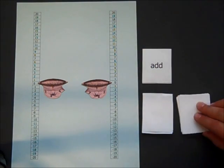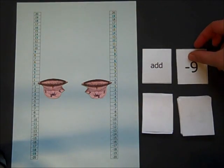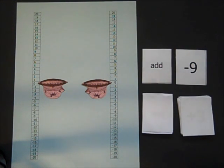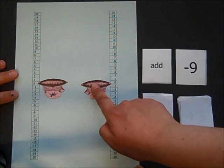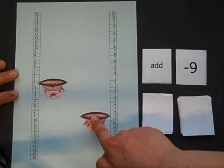Okay, so my first move is add negative 9, so that's the same as adding 9 sandbags, so oh dear, I'm going to sink all the way down like that.